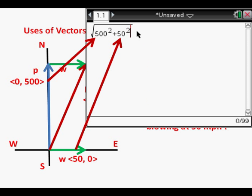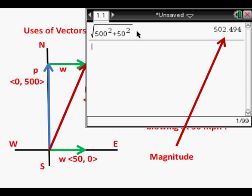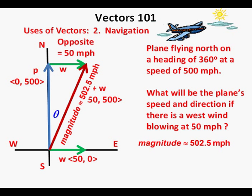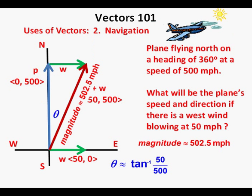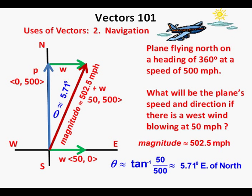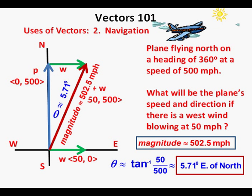To find the magnitude, it's the Pythagorean theorem again — the square root of 500 squared plus 50 squared. Pressing enter, we get a magnitude of about 502.5 miles per hour. We label the magnitude of vector p plus w. To find the direction angle theta — the angle the plane is moved away from north — the opposite side is 50 miles per hour and the adjacent side is 500 miles per hour. Using the tangent ratio and inverse tangent, theta equals the inverse tangent of 50 over 500. Pressing enter gives an angle of approximately 5.71 degrees east of north.